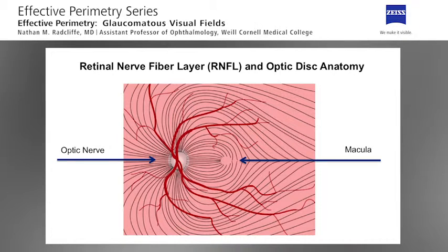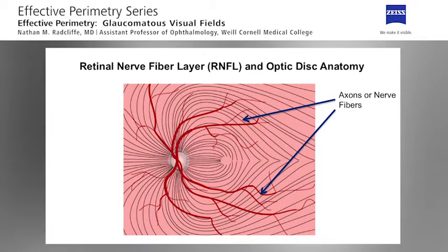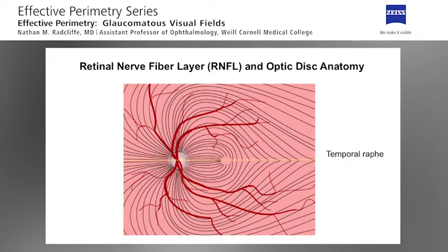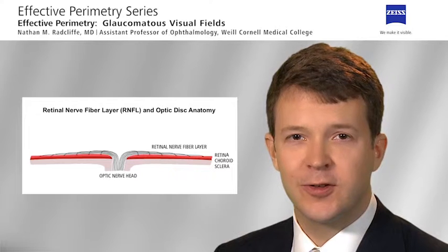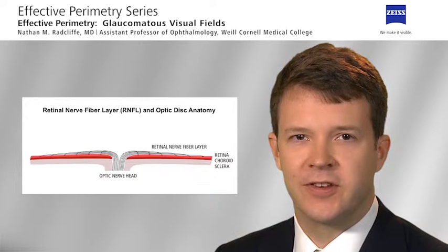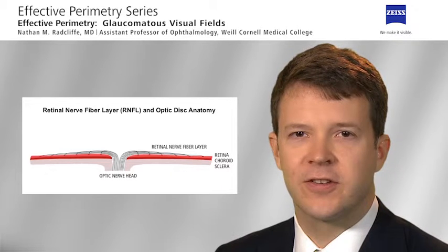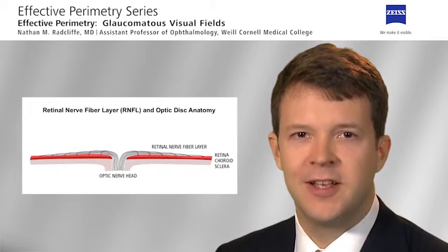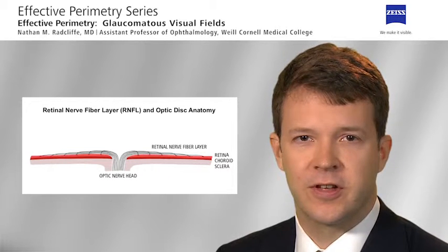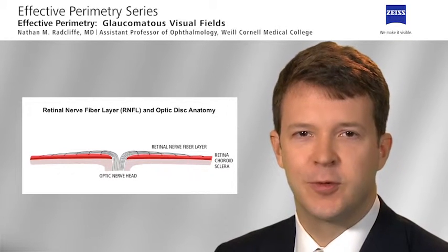Here we have an illustration depicting the optic disc, macula, and nerve fibers. Retinal ganglion cell axons follow an arcuate path to the optic nerve. Axons or nerve fibers extending from the optic disc towards the temporal retina curve around the macular area. Neurons from the temporal superior and inferior retinal areas do not mix, but generally respect the temporal raphae. Axons also generally maintain a retinotopic organization in the optic disc in the sense that longer axons tend to be situated in the optic disc periphery, while shorter axons from ganglion cells nearer to the optic disc follow a more central course throughout the optic disc.